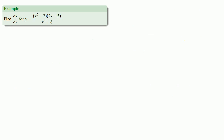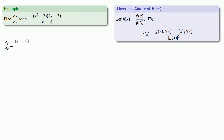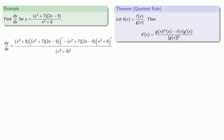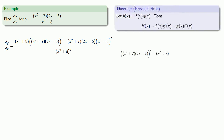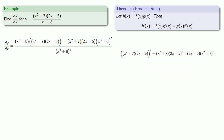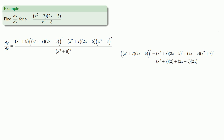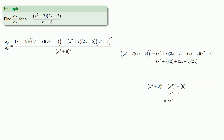Let's try a more complicated function. The last thing that we do is the type of function we're dealing with — here, if we take a look at this, it is a quotient. So we can find the derivative of a quotient: denominator times derivative of numerator, minus numerator times derivative of denominator, all over denominator squared. Now we need to find the derivative of the numerator expression, which is a product, so we'll use the product rule: first times derivative of second, plus second times derivative of first. We fill in the derivatives of (2x − 5) and (x² + 7), and we also need the derivative of (x³ + 8). We substitute in our values to get our final form of the derivative.